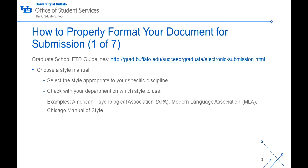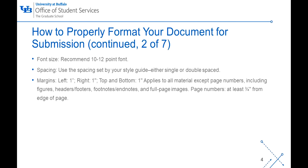In order to get started, you will need to choose a style manual. Select one that is appropriate to your specific discipline. If you're unsure, check with your department on which style to use. For the font size, use 10 to 12 point font — anything smaller or larger may be difficult to read. The spacing of your document may be set by your style guide and can be either single or double spaced.